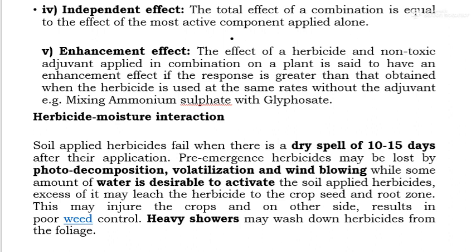Regarding herbicide-moisture interaction: soil-applied herbicides fail when there is a dry spell of 10–15 days after application, so the soil must be moist at the time of application. Pre-emergence herbicides may be lost by photodecomposition, volatilization, and wind blowing, while some water is desirable to activate soil-applied herbicides. Excess water may leach the herbicide into the crop seed and root zone, injuring the crop and resulting in poor weed control. Heavy showers may also wash herbicide off the foliage, causing complete loss.